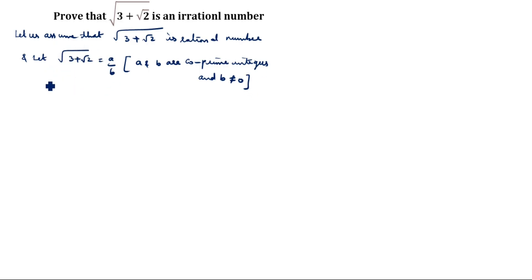You see in this, any rational number can be expressed in a by b form. Next, we will squaring on both sides.